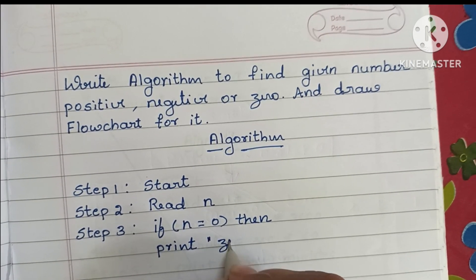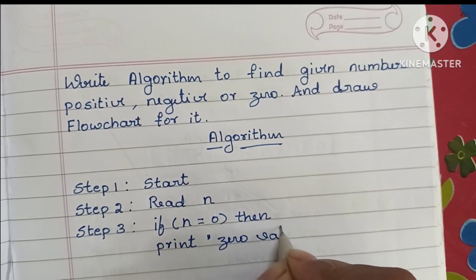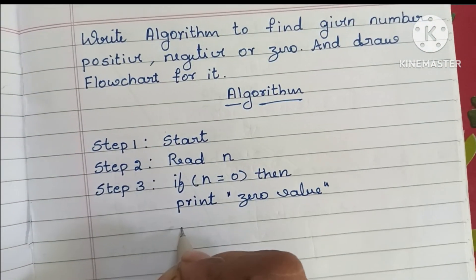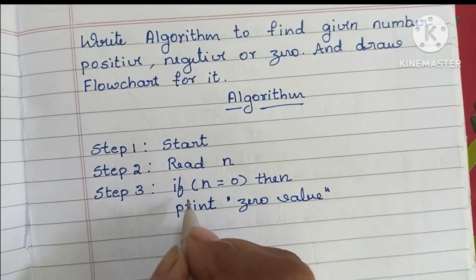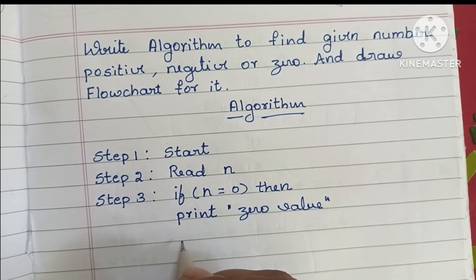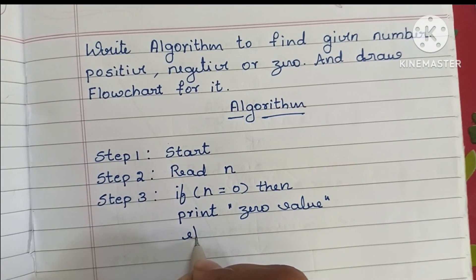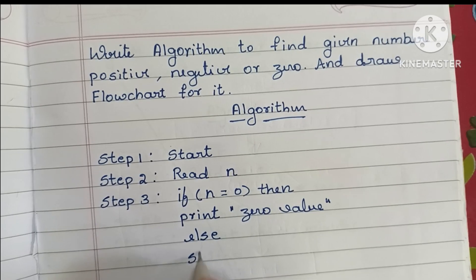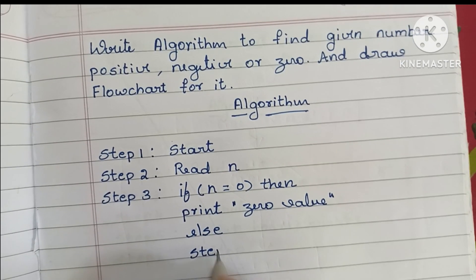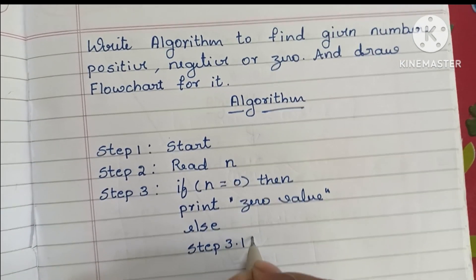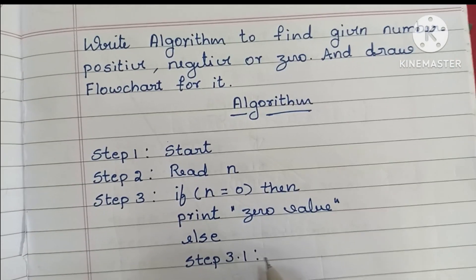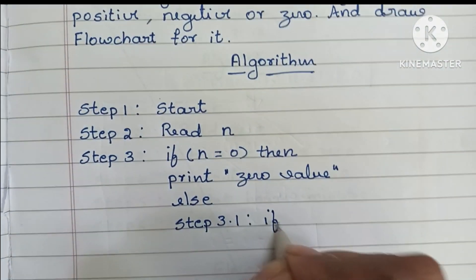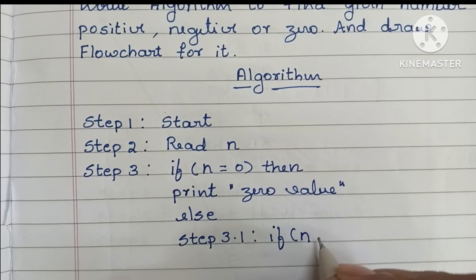If the condition N equals zero is false, we go to the else condition and execute step 3.1, where we have to again check the value of N.